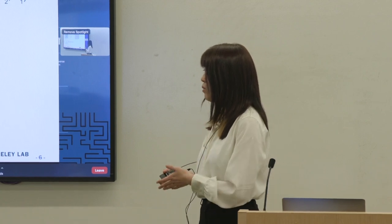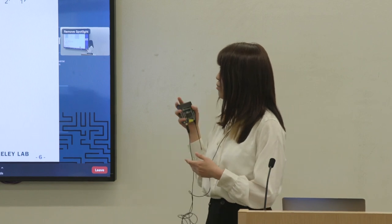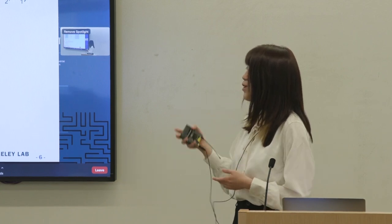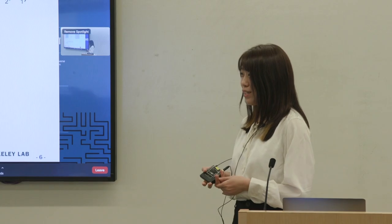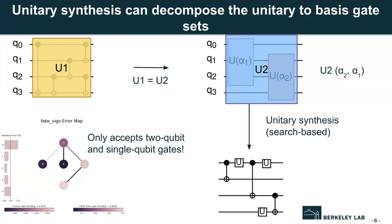must be translated to a circuit with only these native gate sets. So now even though we know the matrix U alpha 1 and U alpha 2, we cannot run the circuit on the hardware. So decomposing this matrix to the native gate sets is a process called unitary synthesis. So finally, the circuit is translated to something like this, and then this circuit now is executable on the hardware.